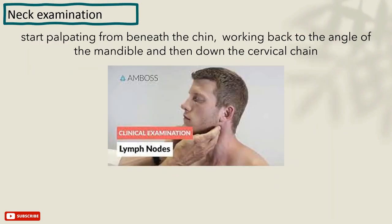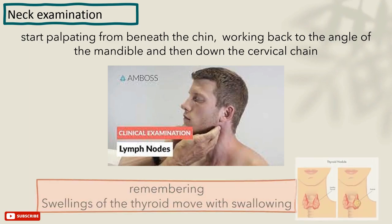Neck examination. Start palpation from beneath a fixed point like the chin, working your way back to the angles of the mandible and then down the cervical chain. Examine the submental, submandibular, and deep cervical lymph nodes. Remember, any swelling associated with the thyroid gland will move with the swallowing movements of the patient.